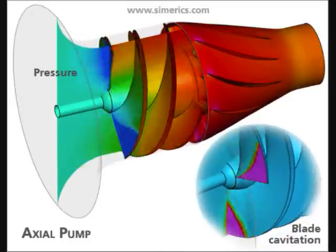In the simulation presented here, the pressures and the cavitation on the blades for an axial pump are presented. The cavitation is indicated by the magenta areas in the surface plots.